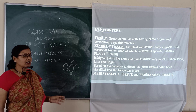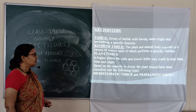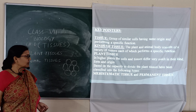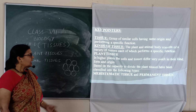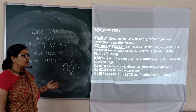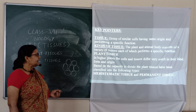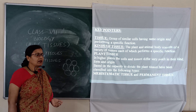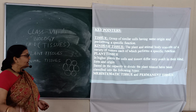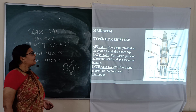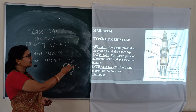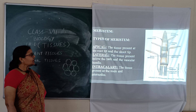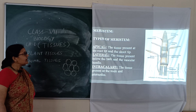Higher plants have different types of tissue with different origins and different functions. Based on their capacity for division — whether they are dividing or permanent — tissues are classified as meristematic tissue and permanent tissue. Meristematic tissue is commonly called meristem.